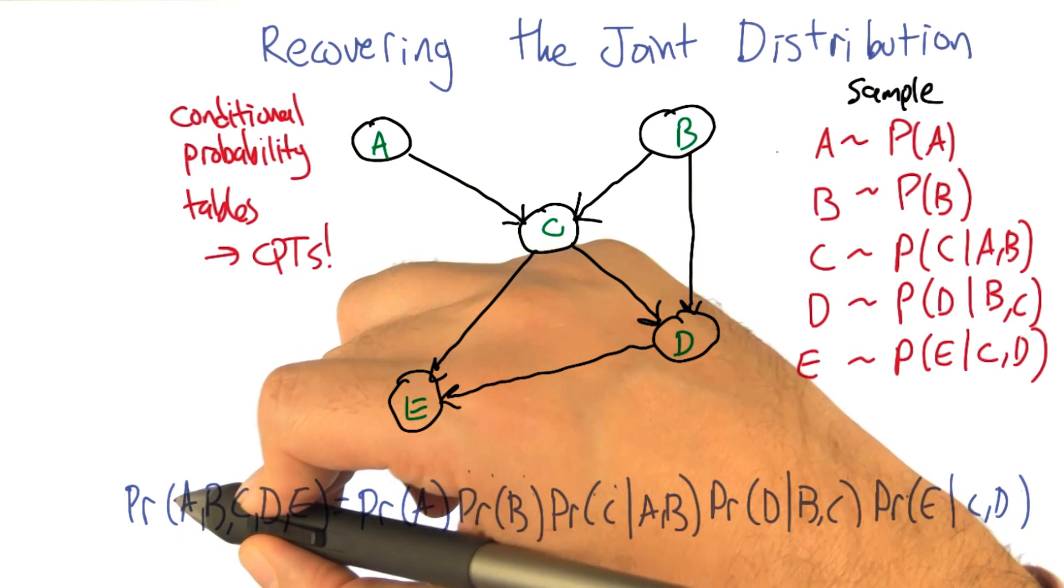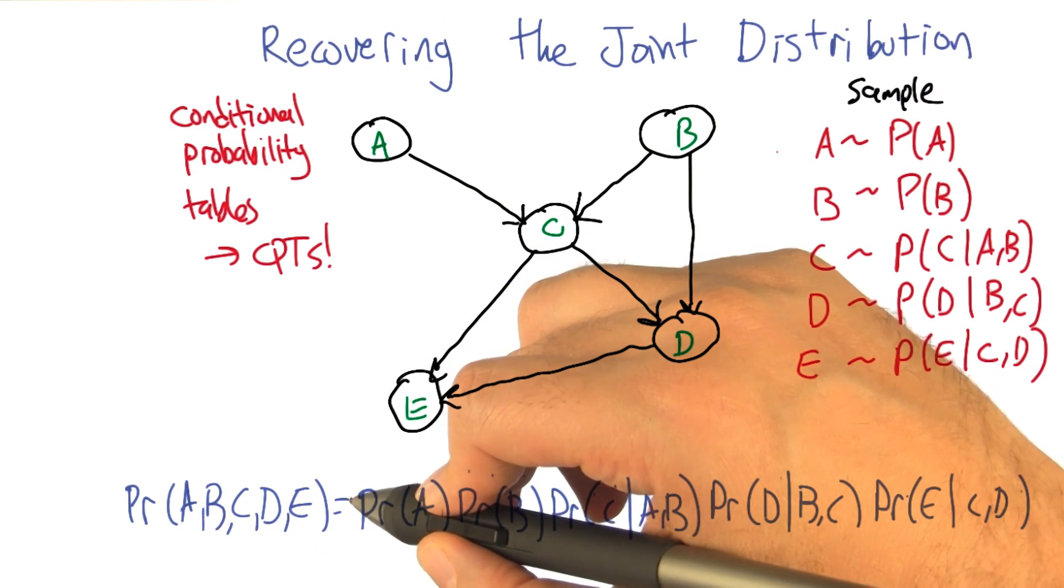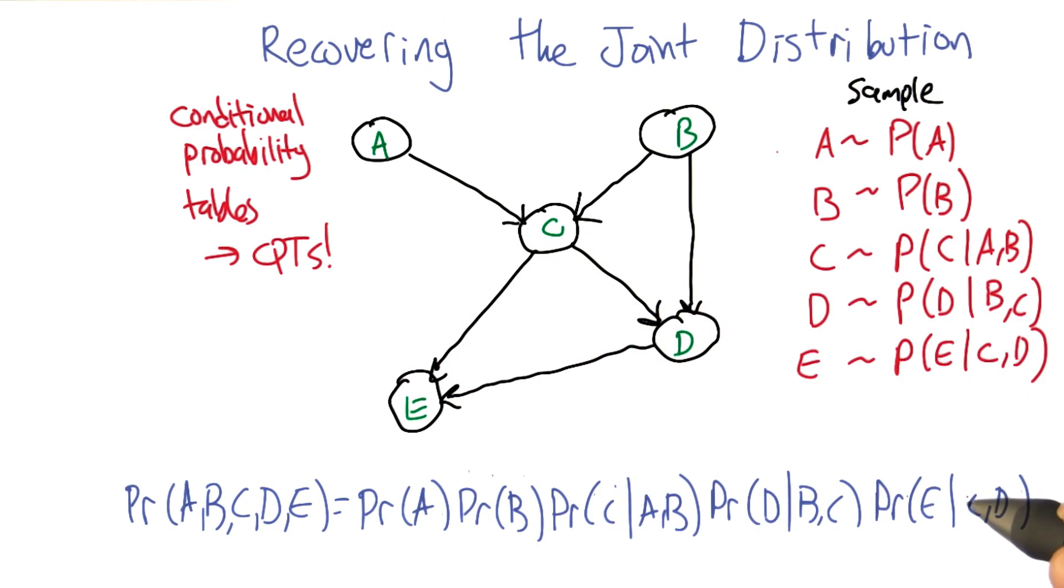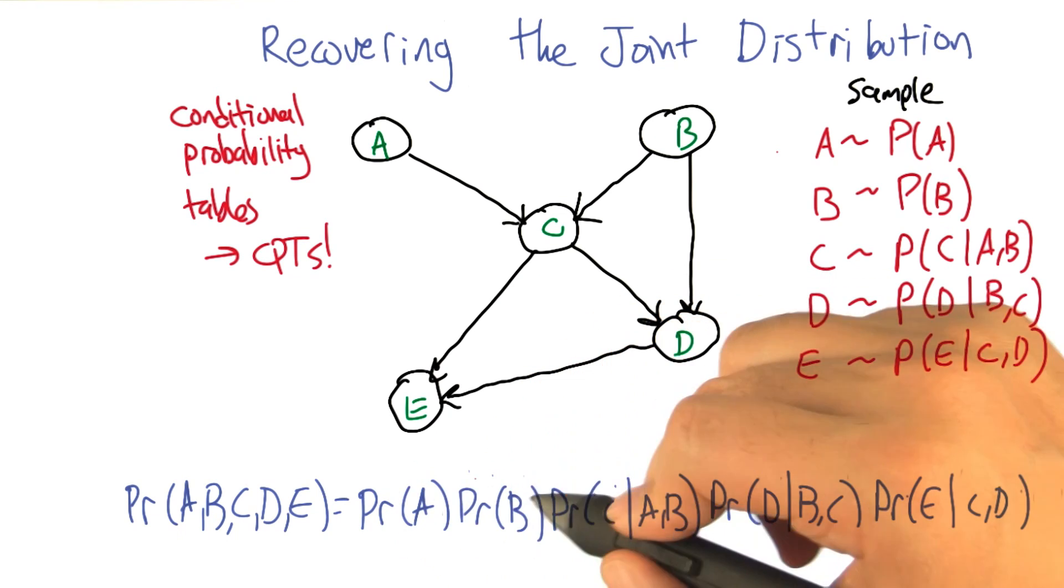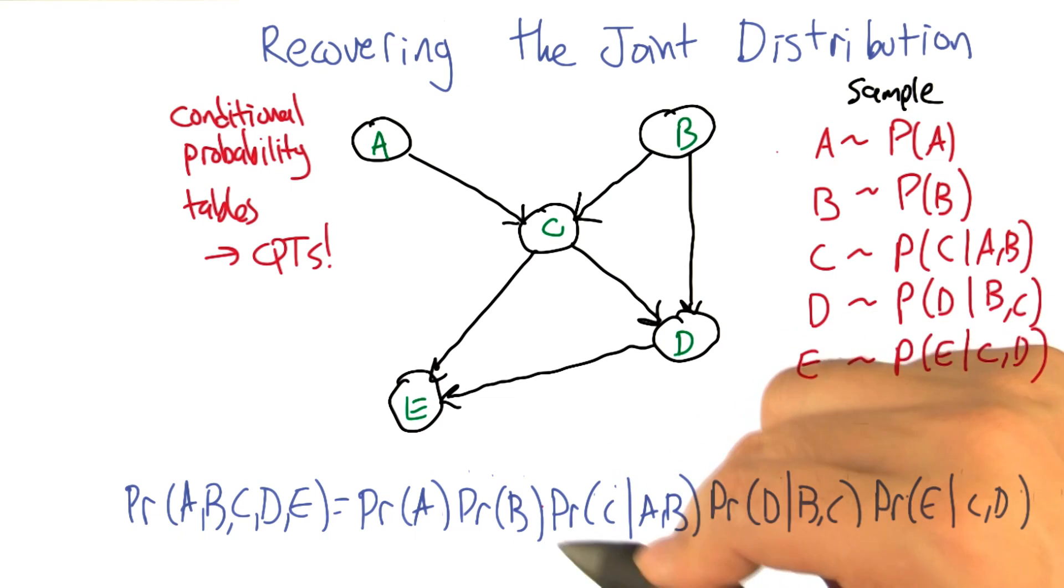the joint probability for some assignment to the variables is equal to just the product of all the individual values. So the probability that value of A would be taken times the probability that value of B would be taken times the probability that value of C would be taken conditioned on the values that were chosen for A and B.